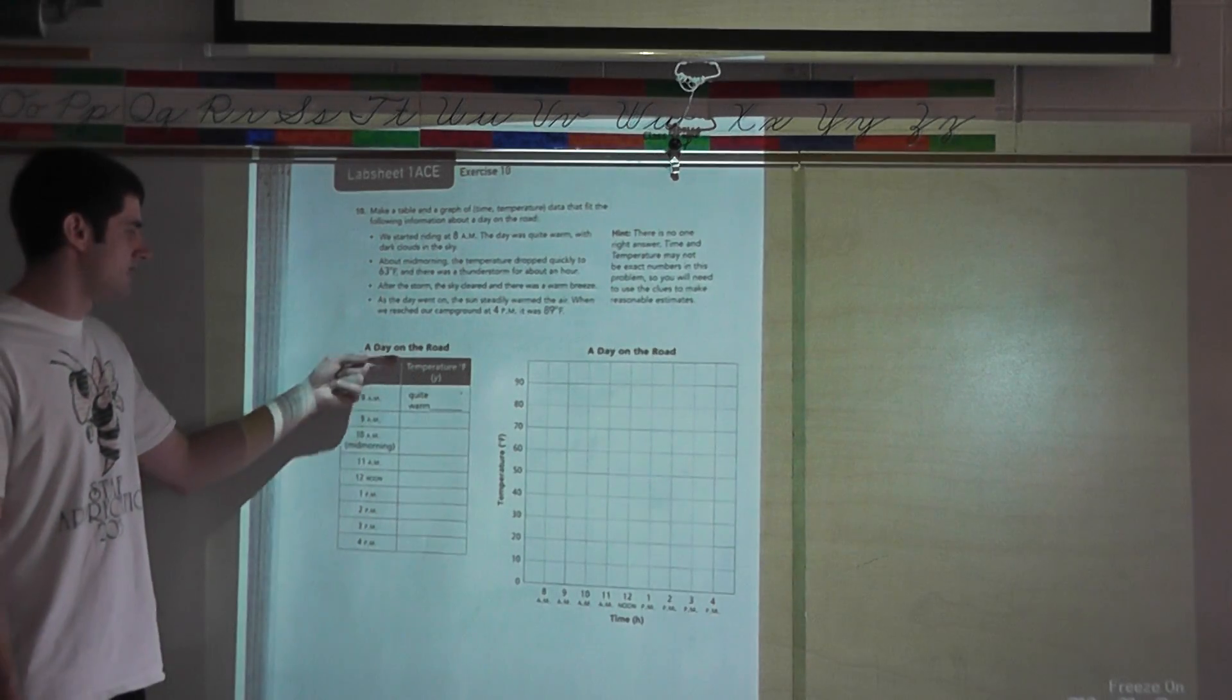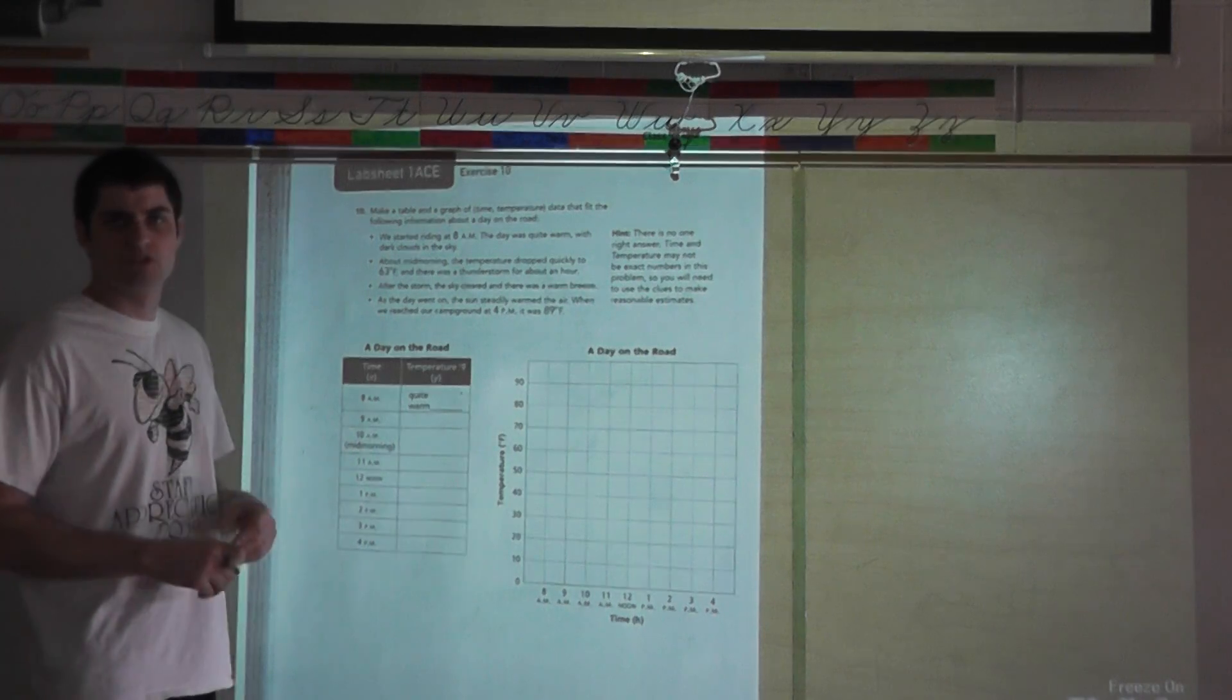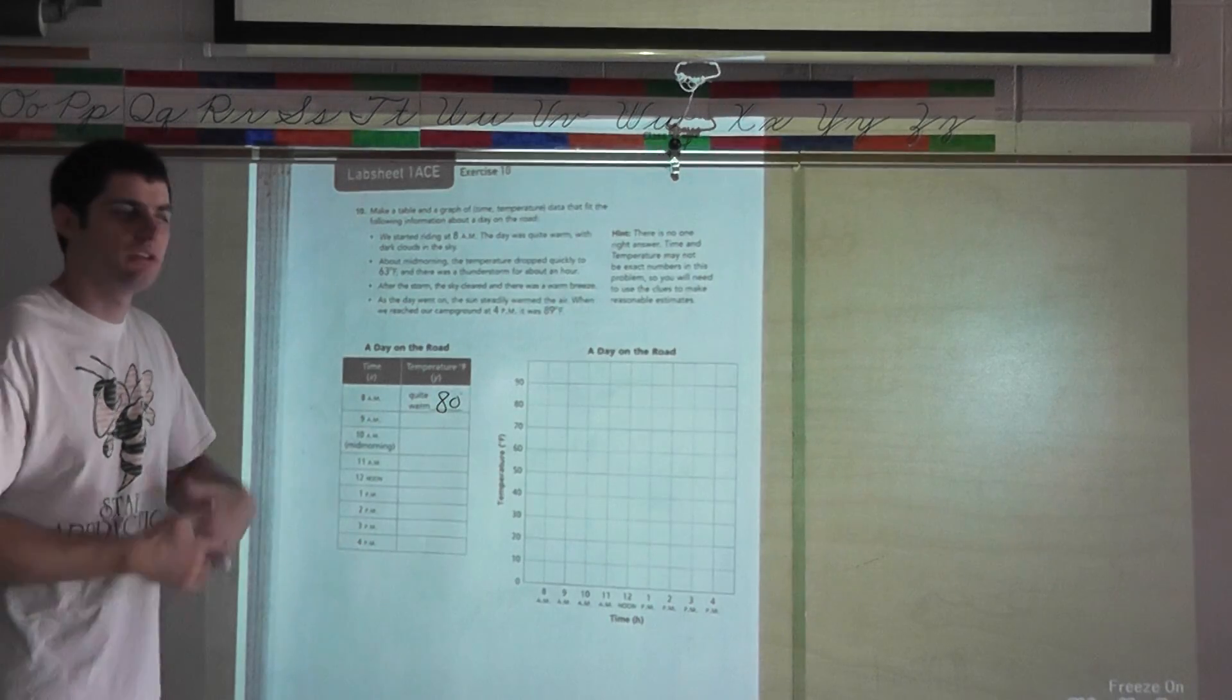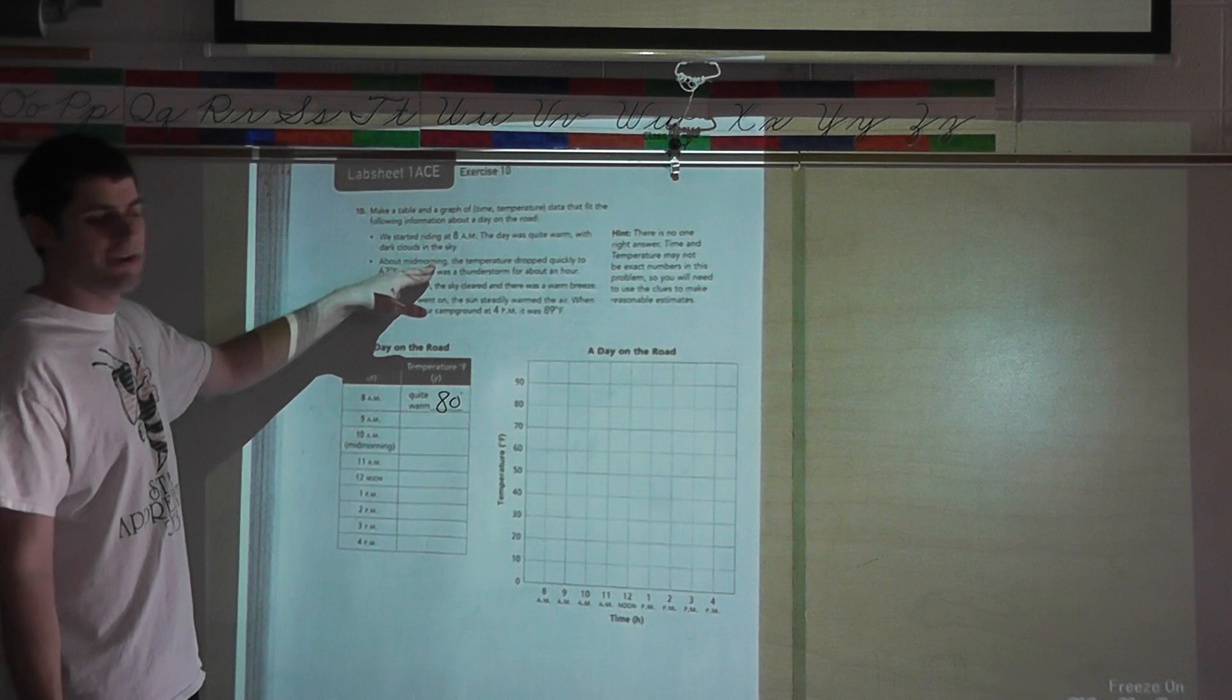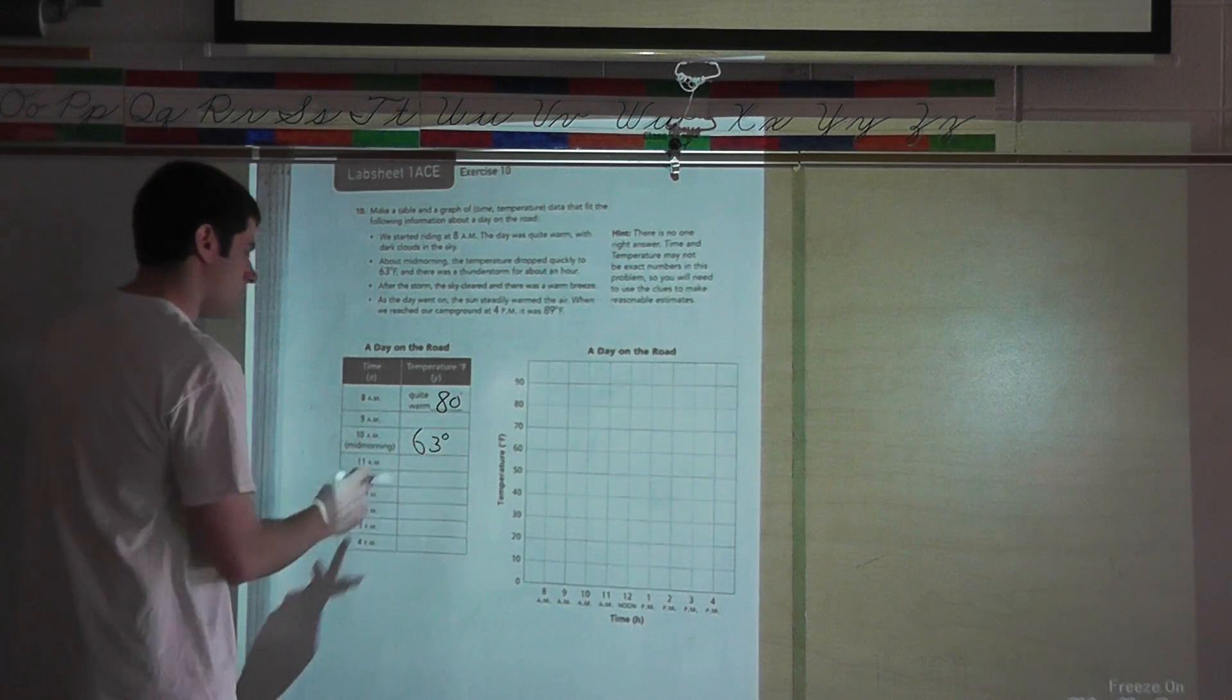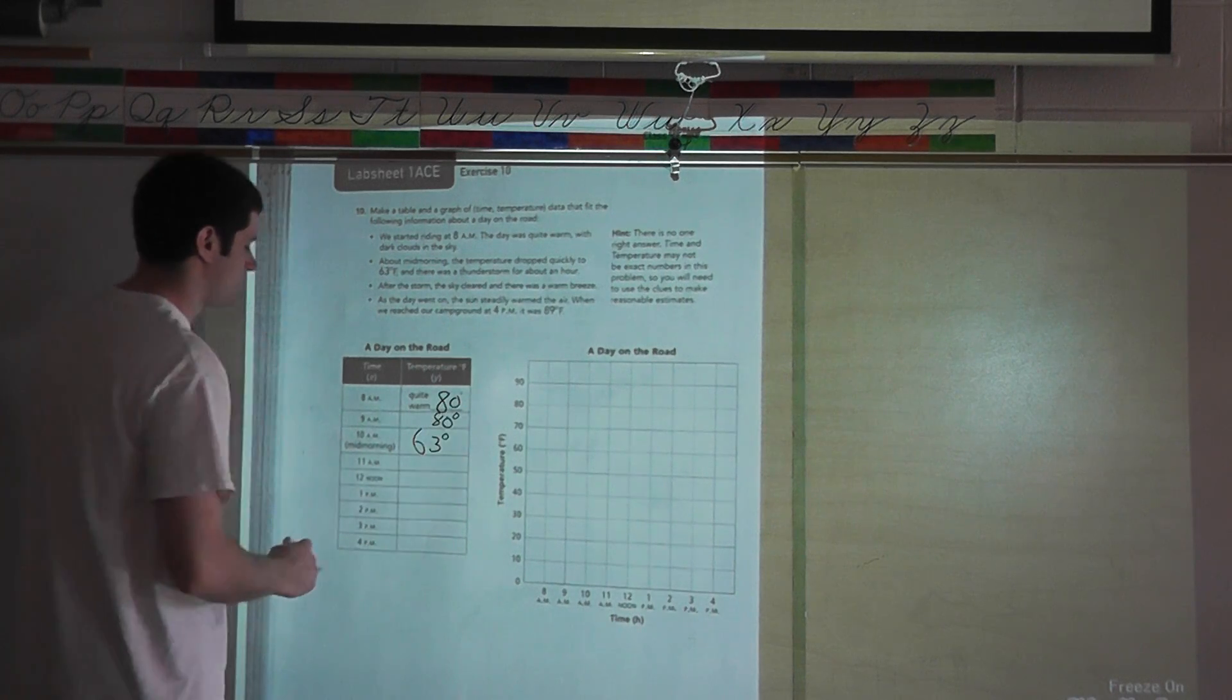I'm going to start off with our table here on the side. So the day on the road, time is on the left-hand side here. Temperature is on the right-hand side. I know that at 8 a.m. they said the day was quite warm with dark clouds in the sky. I'm going to say quite warm, I'm going to say is like 80 degrees. At 9 a.m., maybe the temperature stayed the same, 80 degrees.